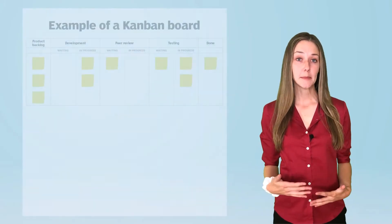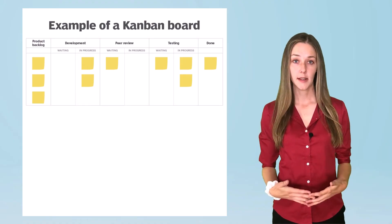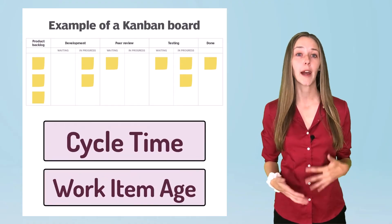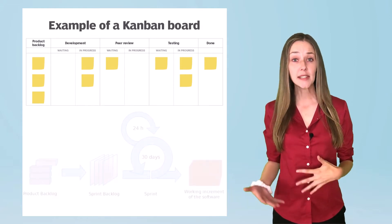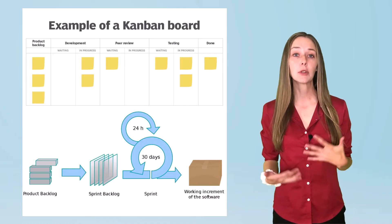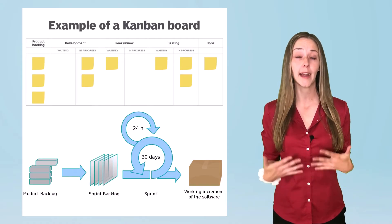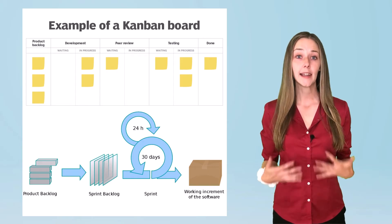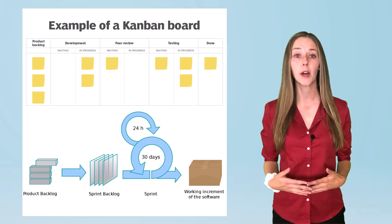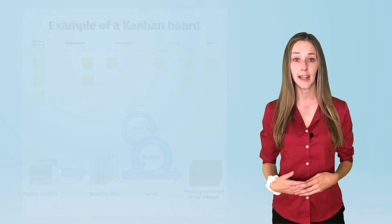Most Scrum teams adopt some form of a Kanban board to help visualize their progress. They also typically use Kanban metrics like cycle time and work item age to measure their success. As you can see, Scrum and Kanban aren't mutually exclusive. The flow-based perspective of Kanban can actually complement the Scrum framework and its implementation. In fact, I had a chance to talk to David West, the CEO of Scrum.org, and here's what he said when I asked him about the difference between Scrum and Kanban.